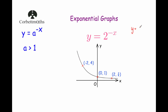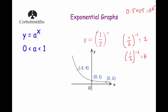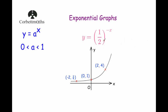If you know your transformations of graphs, y equals f of negative x is just a reflection in the y-axis. So if we look at y equals 2 to the x, then y equals 2 to the negative x will just be a reflection in the y-axis. The same applies for values of a between 0 and 1 — if we have y equals a half to the power of negative x, that would just be a reflection of y equals a half to the power of x in the y-axis.